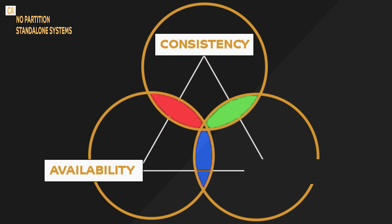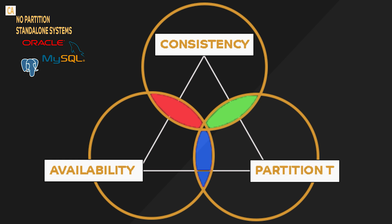Common examples of CA databases are Oracle, MySQL and Postgres. Given that networks aren't completely reliable, you must tolerate partitions in a distributed system. According to CAP theorem, this means we are left with just two options.